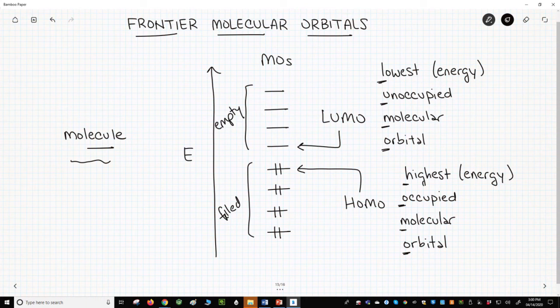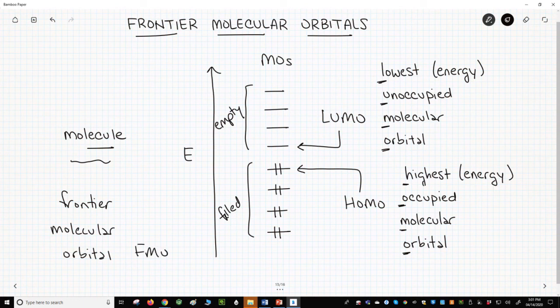Understanding just these two orbitals can help us predict the molecule's activity. This idea of focusing on just the HOMO and LUMO to predict reactivity is called frontier molecular orbital or FMO analysis.